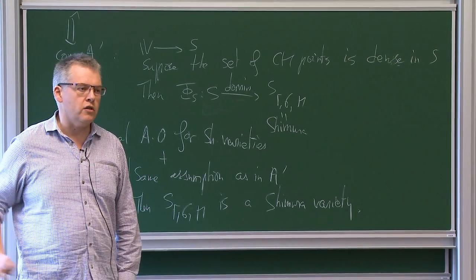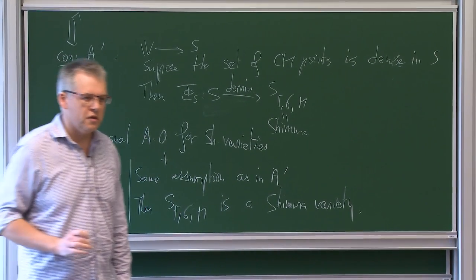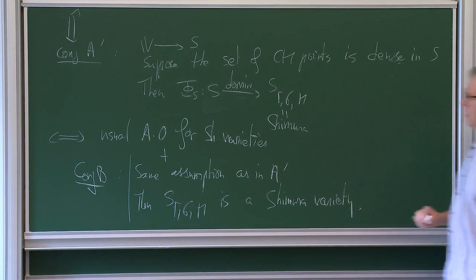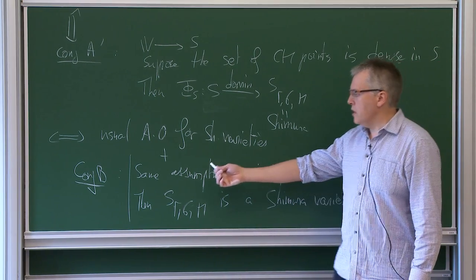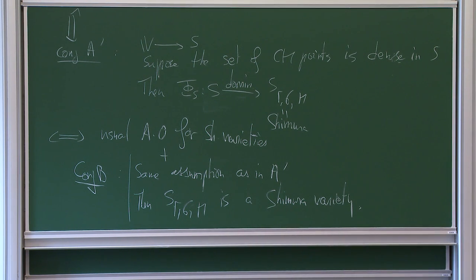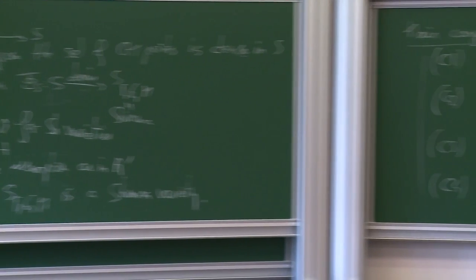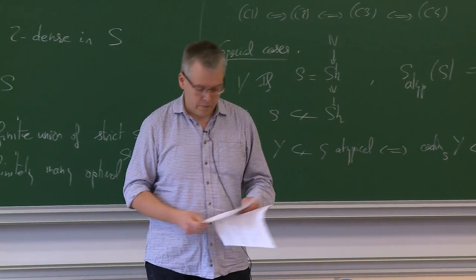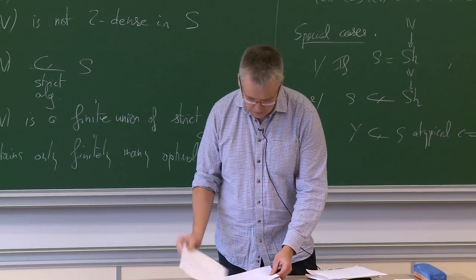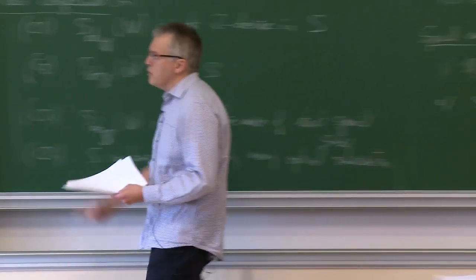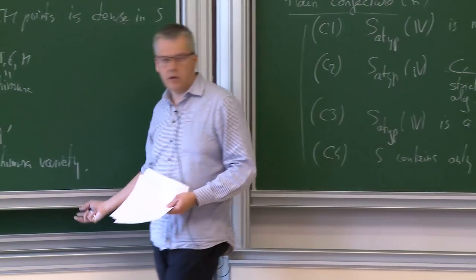I wrote all these as conjectures and I have very little evidence for this, but it clarifies at least what should be looked at. So really, conjecture B is very strong: it tells you that if you have a variation of Hodge structure and a Zariski-dense set of CM points, then the target has to be a Shimura variety — your generic Mumford-Tate group has to be of Shimura type, and the associated period map takes values in a Shimura variety associated to that group.